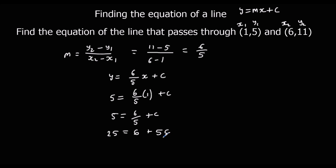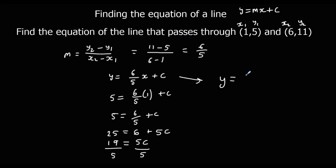Now I need to get c on its own. So I'm going to get rid of the 6 — minus 6 on both sides — which gives me 19 equals 5c. Then divide both sides by 5, and that tells me c is 19 over 5. So the equation is y equals 6 fifths x plus 19 over 5.